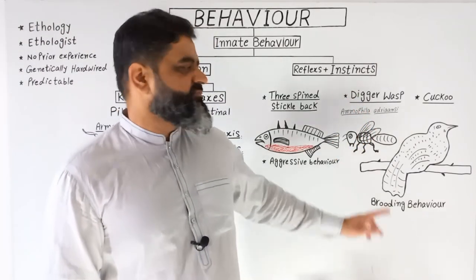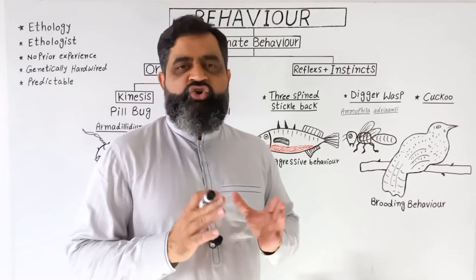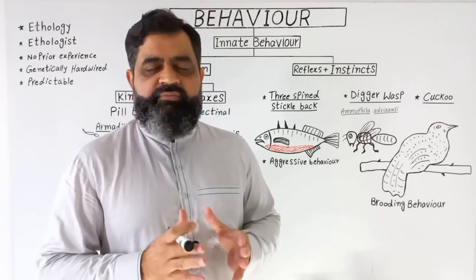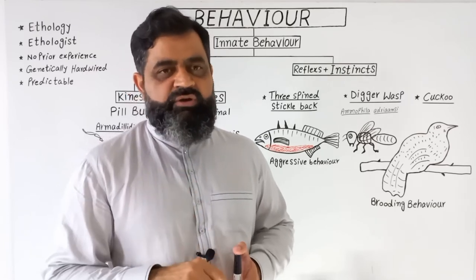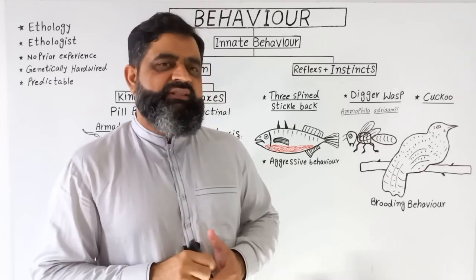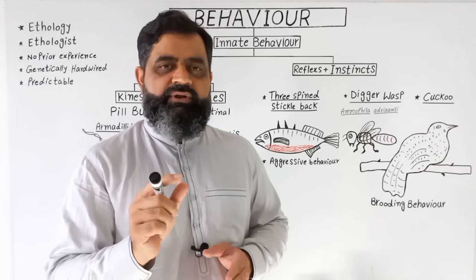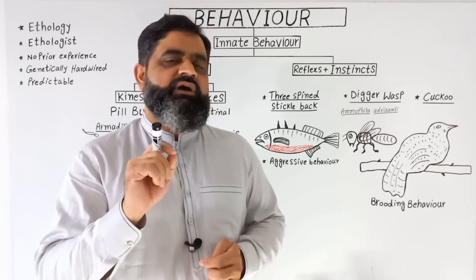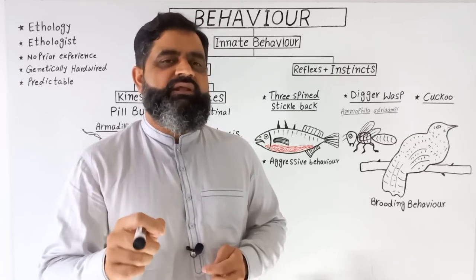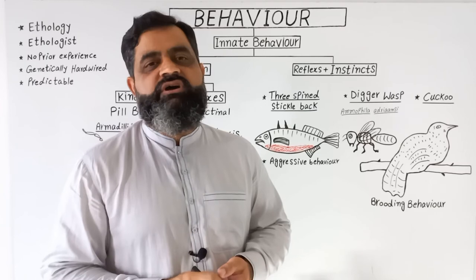The second example to study instinct is the digger wasp, with the scientific name Sphex adriansei. This is a small insect with a very short lifespan and a very interesting life. When the female is ready for breeding, she prepares a nest inside the soil by digging a hole. She then goes outside, finds an insect or caterpillar, stings and kills the caterpillar, and brings it back into the nest.